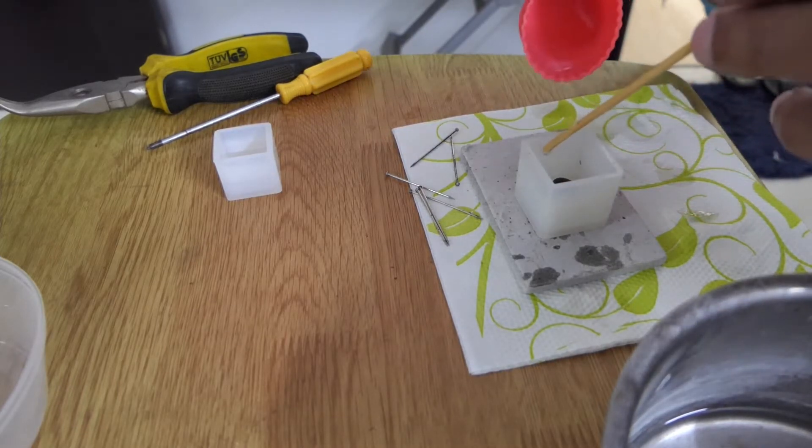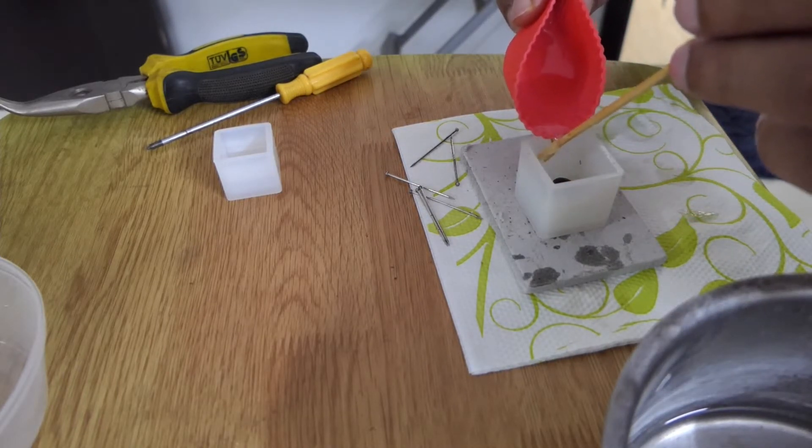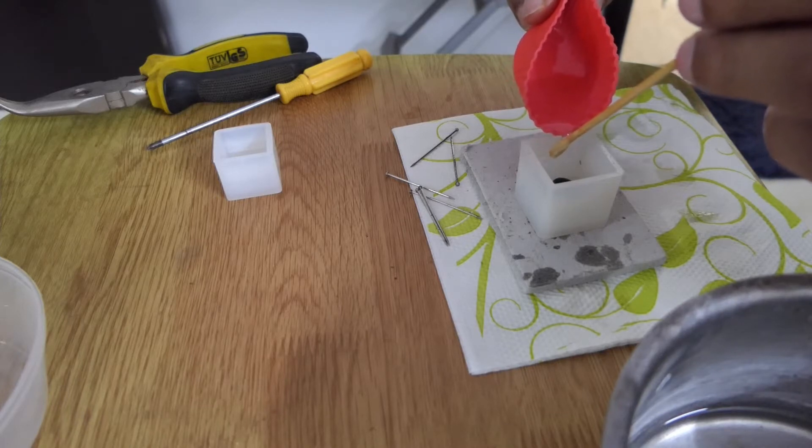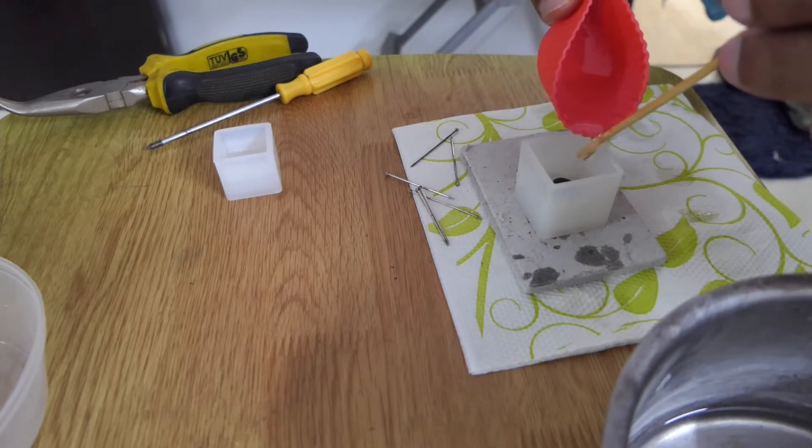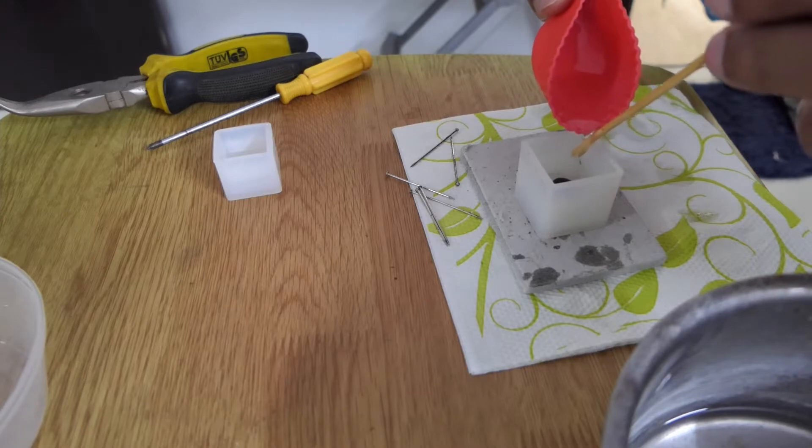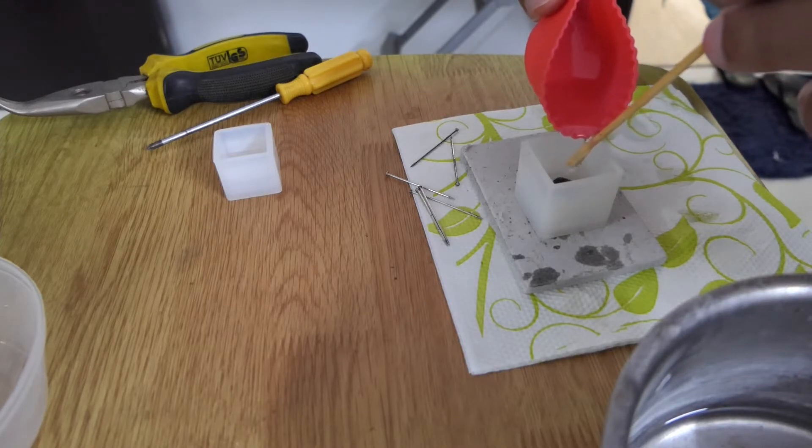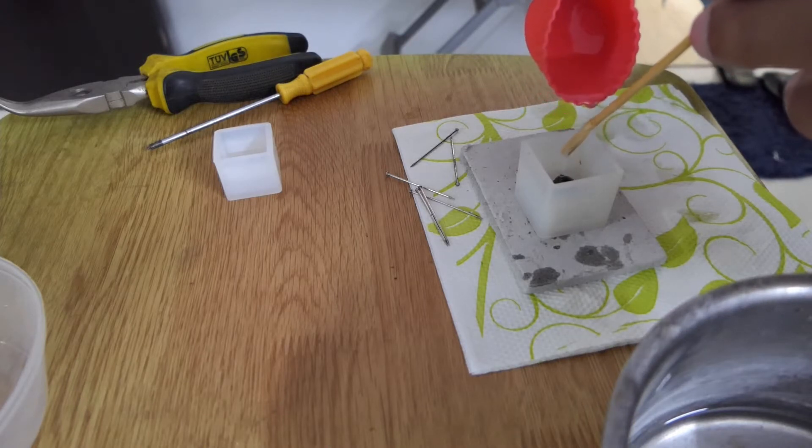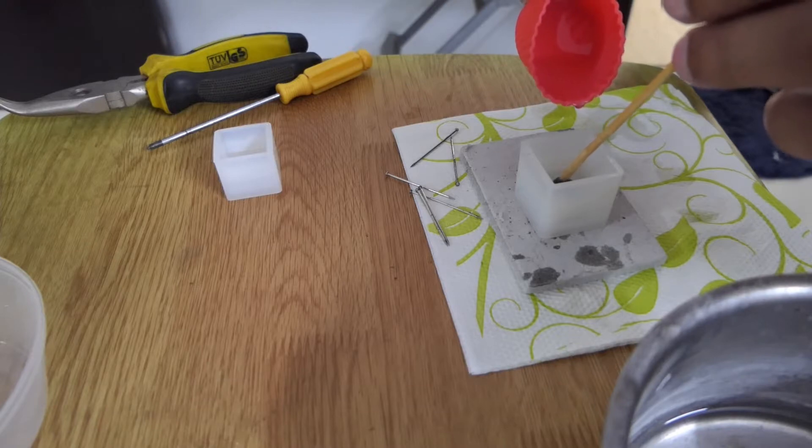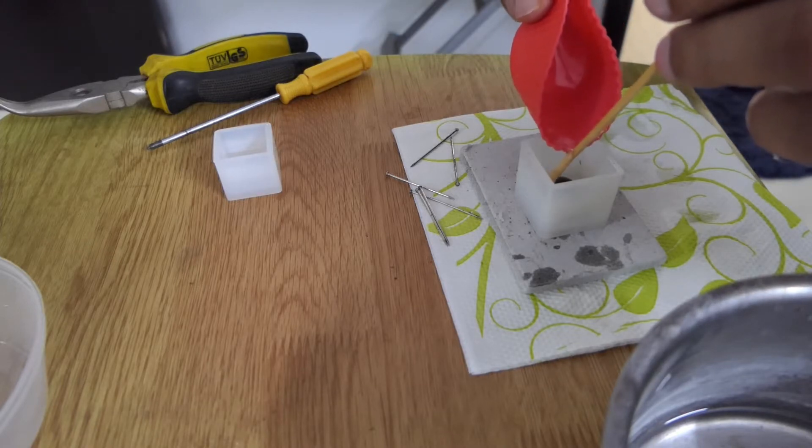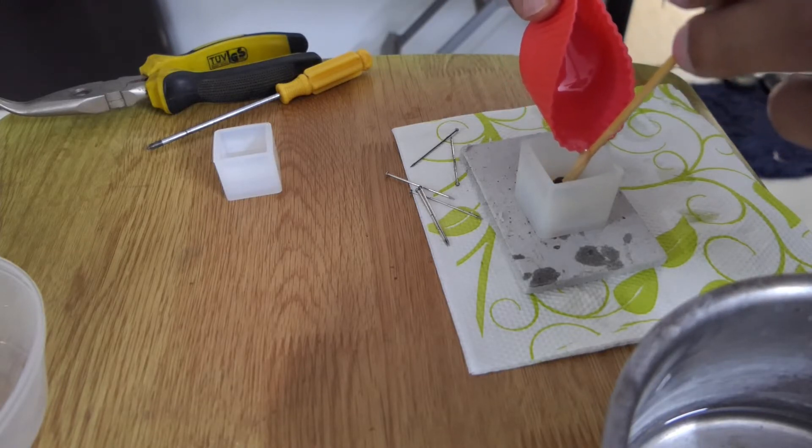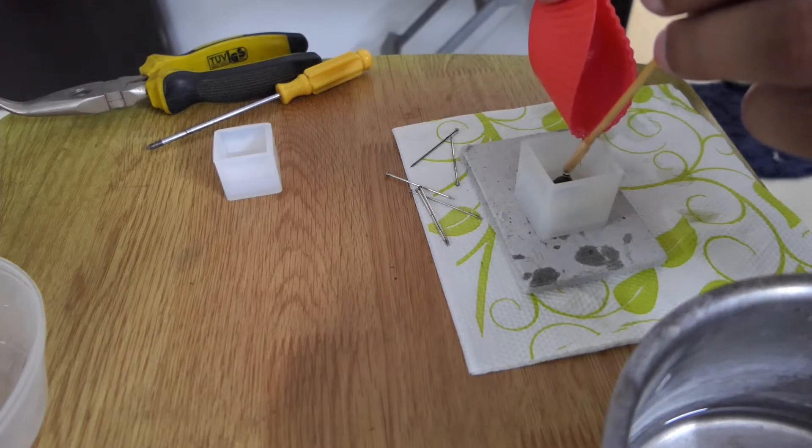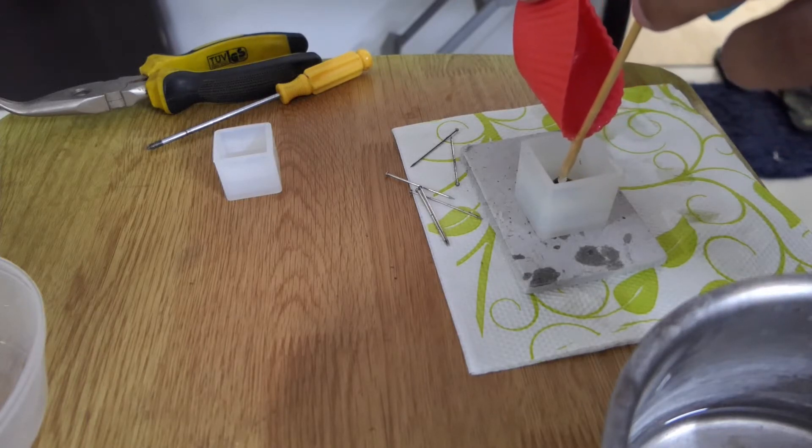Here I am pouring the second layer. When I pour the second layer, the need is that it should not float within this layer, because that has happened to me previously where I've added the second layer too soon after the first layer and the specimen has just floated to the top.